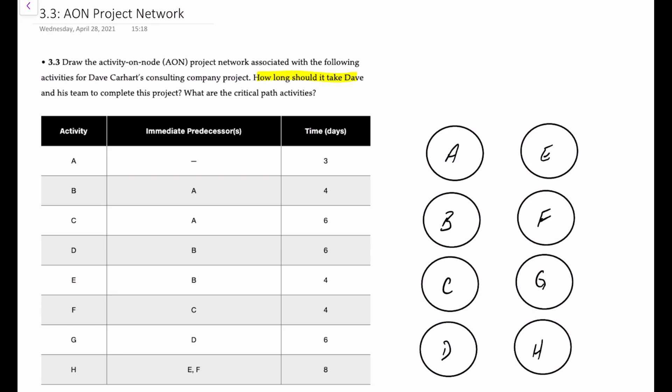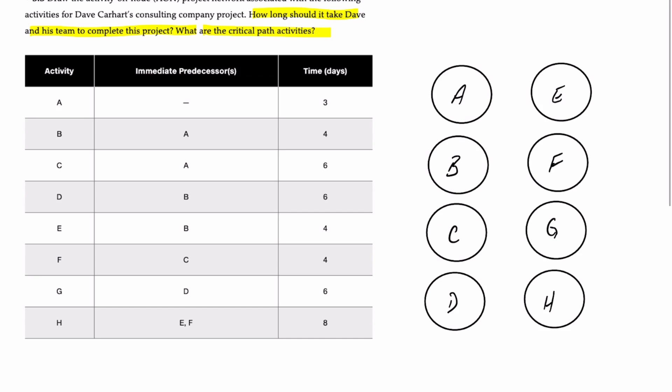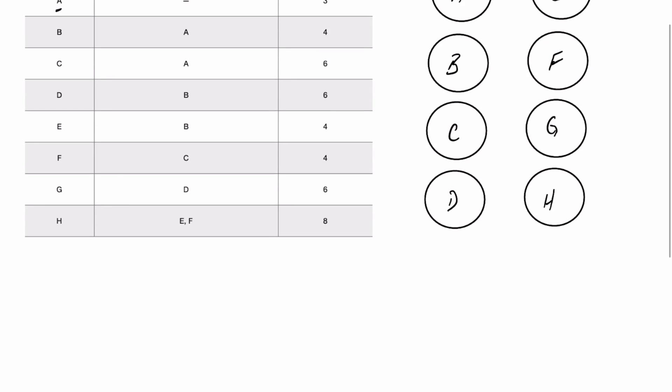Our objective is simple: to determine how long it should take Dave and his team to complete the project and what are the critical path activities. So I've already drawn some activity nodes here to get us started. As we can see, the first activity is A and has no immediate predecessors, so that's the one that we're going to start with.